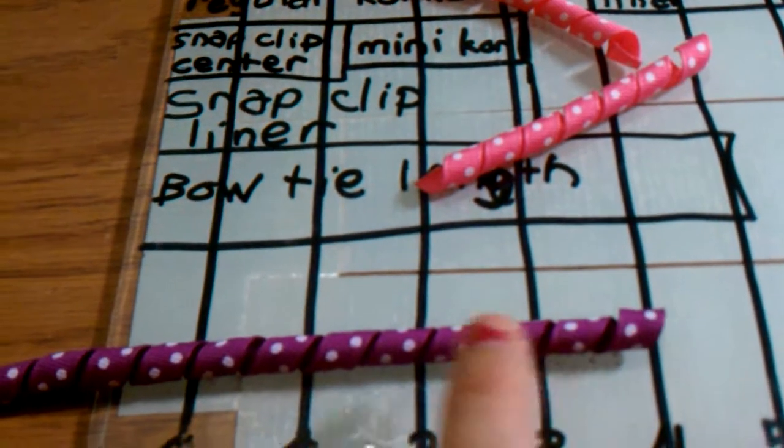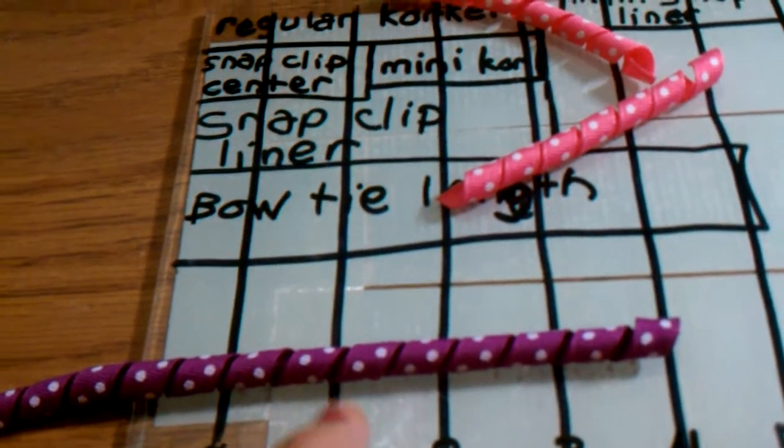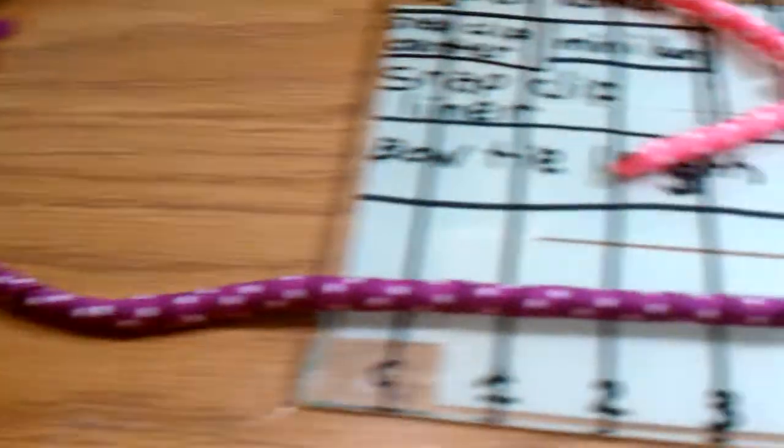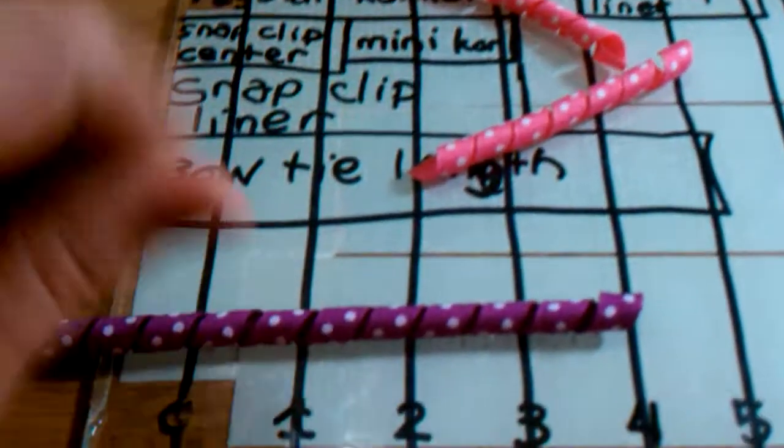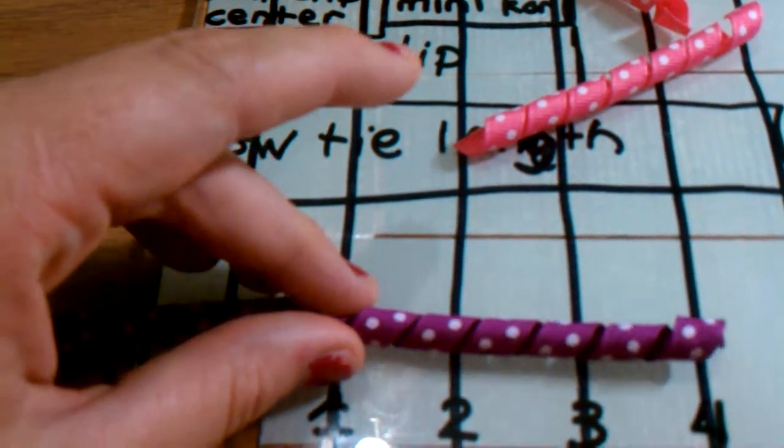Then you count another six and cut again. Keep doing that along the length of the ribbon until it's done. These are really short pieces, so there's only going to be like three pieces cut off of this.